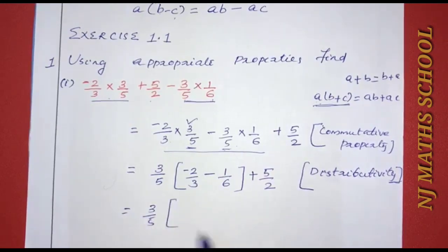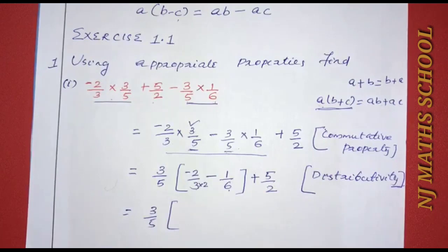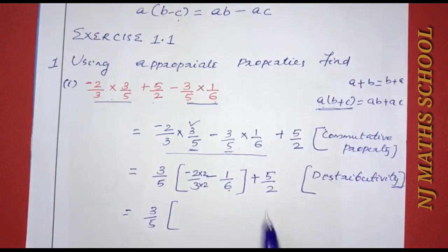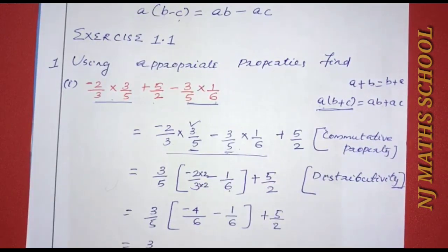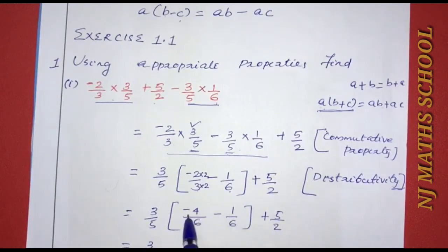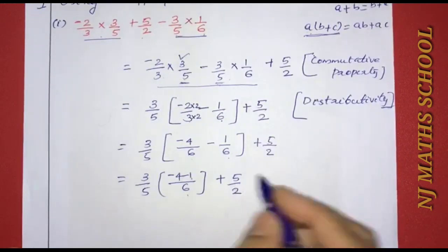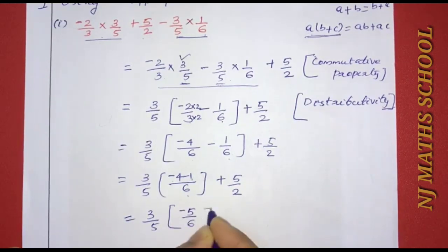We compute: 3 by 5 into (minus 2 by 3 minus 1 by 6) plus 5 by 2. The denominator LCM is 6: minus 2 by 3 becomes minus 4 by 6. So minus 4 by 6 minus 1 by 6 gives minus 4 minus 1 equals minus 5 divided by 6. That gives 3 by 5 into (minus 5 by 6) plus 5 by 2.